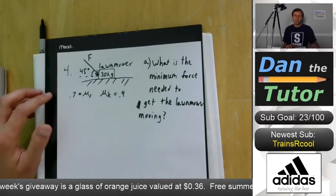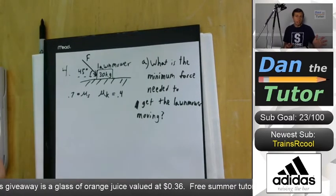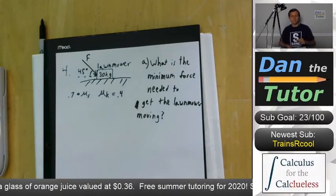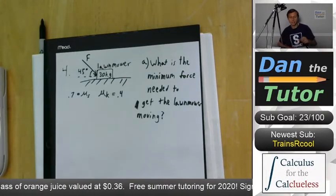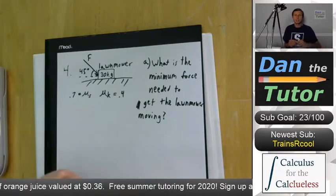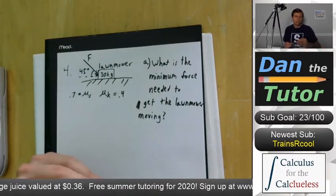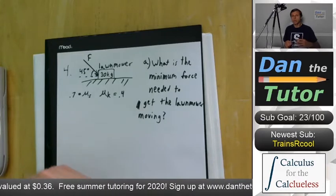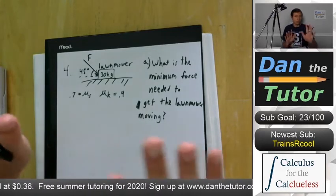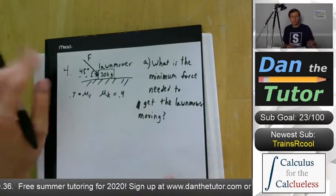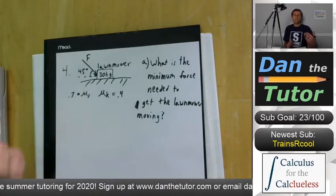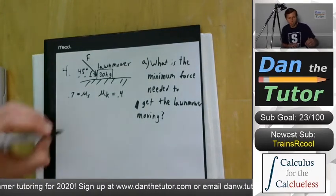Think about what's going on - maybe you've experienced pushing a heavy lawnmower across the grass and needing a decent amount of force to get it going. The reason is because there is static friction involved - static because it's not moving. Before we even make a free body diagram, we have a force at an angle, which means we need to split that vector into its components.